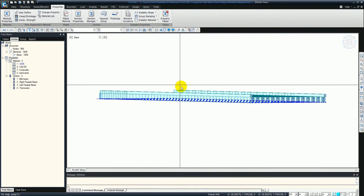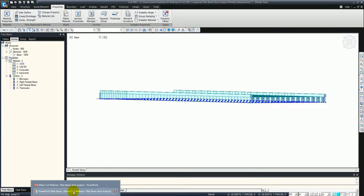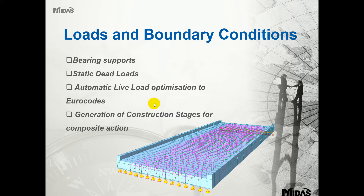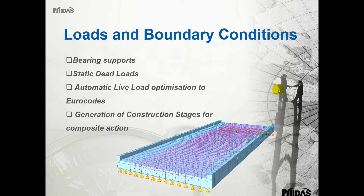Going back to the presentation - now we're going through some of the loads and boundary conditions. First of all we look at the bearing supports in the form of simply supports at the ends of each bridge deck. We're looking at static dead loads like the parapet load, surfacing, and some other loads. Then we look at the automatic live load optimisation to Eurocodes where the programme automatically does it when we create the load lanes and select the vehicles. Then we'll generate the construction stages for the composite action.